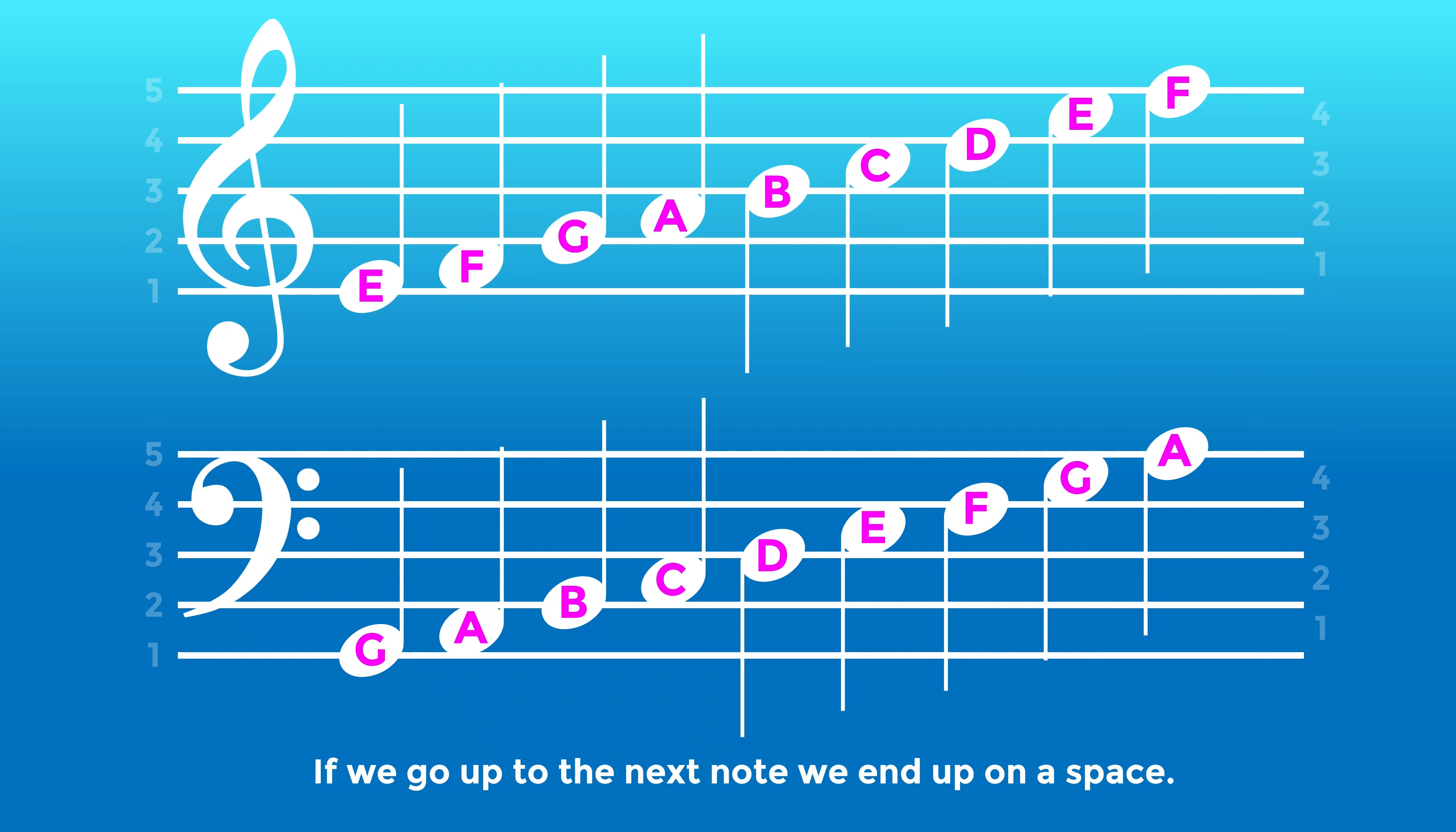If we go up to the next note, we land on a space. Moving up one more note, we land on a line. Then a space, then a line, space, line, space, line.